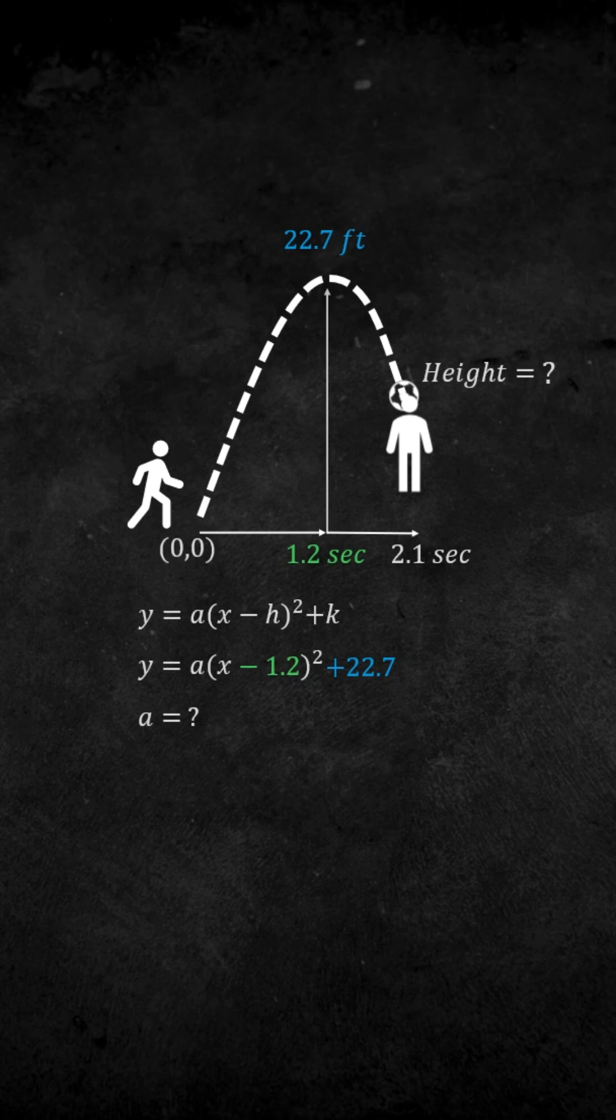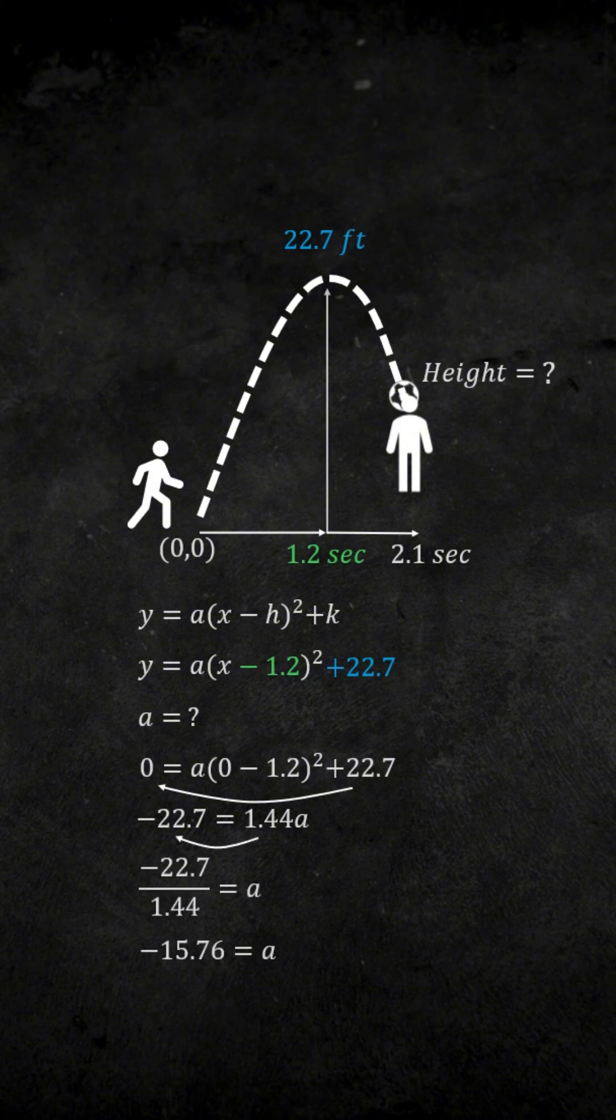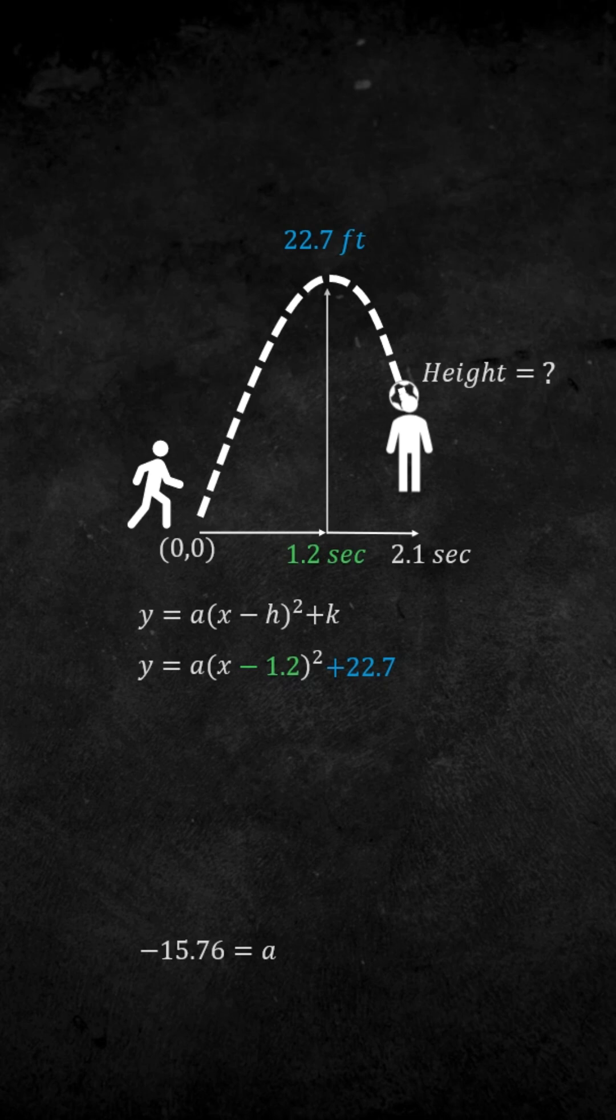To do this, we can take our 0,0 coordinate, which is right when the ball left the player's foot, and sub this in to our equation for x and y. Now, if we rearrange this equation and isolate a, we can find that a is equal to negative 15.76.